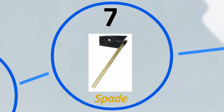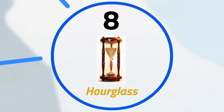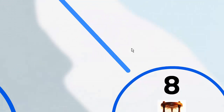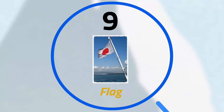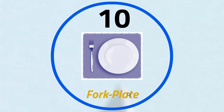So 7 is associated with spade. 8 looks like an hourglass, and 9 looks like a flag. So 9 is associated with the word flag — in other words, the peg associated with the digit 9 is flag. The number 10 looks like a fork next to a plate, so the peg for number 10 is fork and plate.